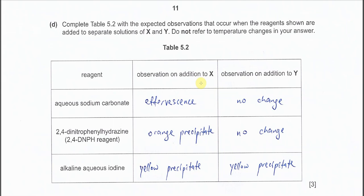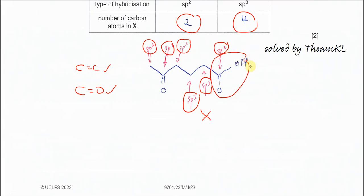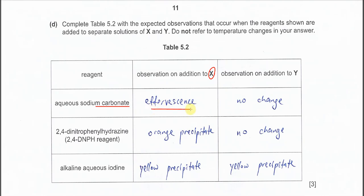Now for the observations when adding the three reagents to X and Y. First, aqueous sodium carbonate: X has a carboxylic acid group, so when sodium carbonate is added to X you will see effervescence and CO2 is formed. For Y, since it is just an alcohol, there is no reaction or no change when sodium carbonate is added.